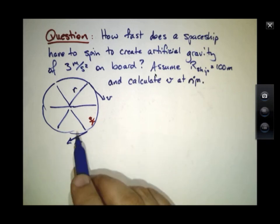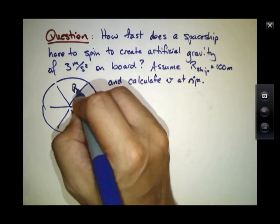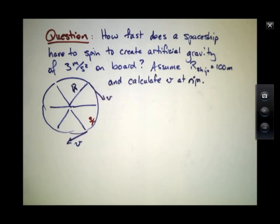So if we assume that the radius of the ship had a value of capital R, which is on the order of 100 meters, so it's like a little bit bigger than a football field in radius, and we wanted to create an artificial gravity of 3 meters per second squared on board, how fast would this speed have to be?